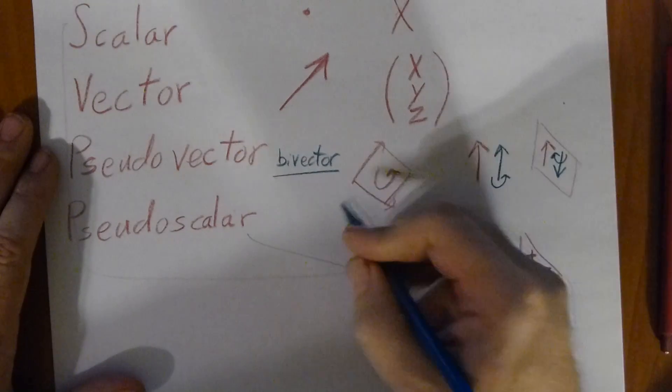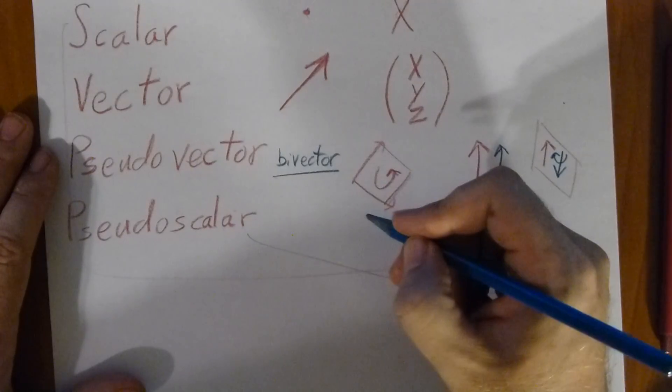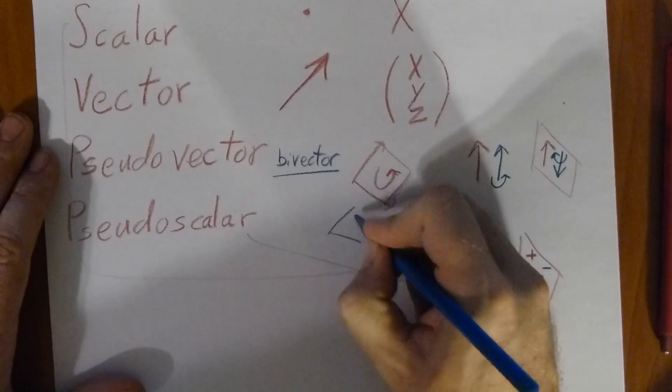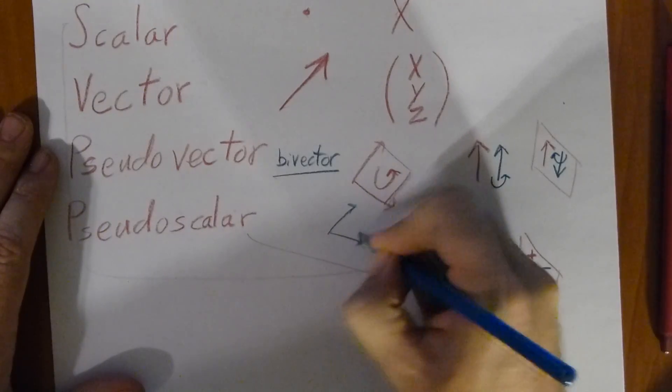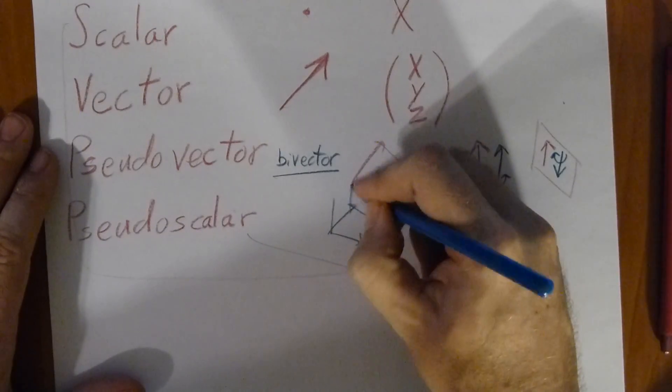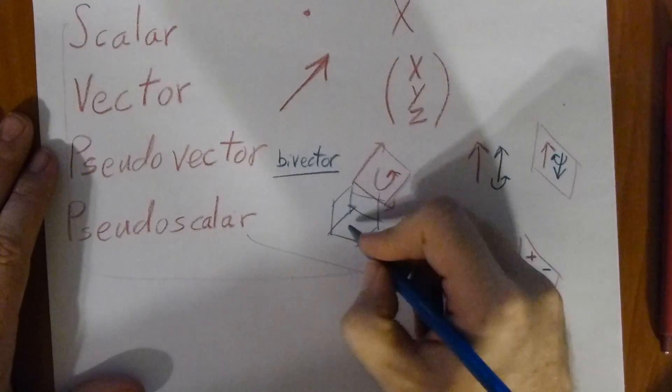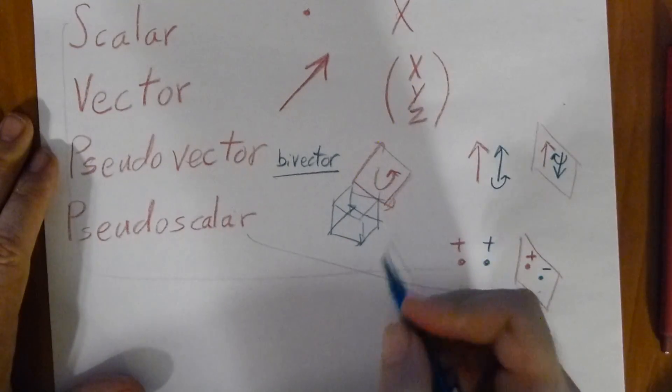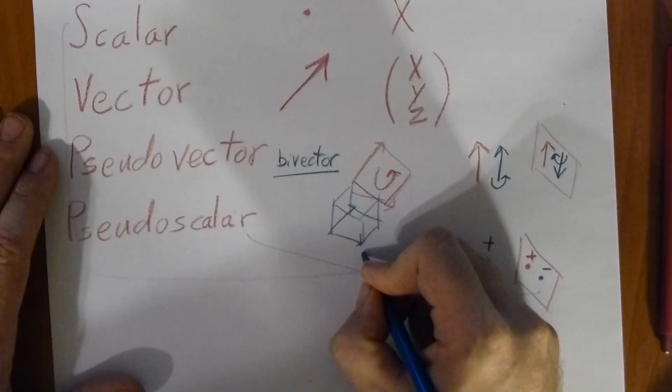We can write this in terms of, for instance, a term, a cube, a volume. So we would have something like vector cross vector.